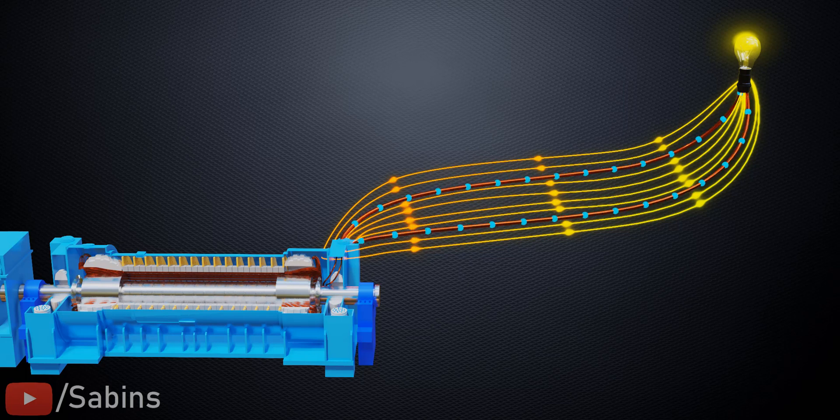However, the interesting thing is that an electron from the alternator does not have to reach the bulb in order to make it glow.